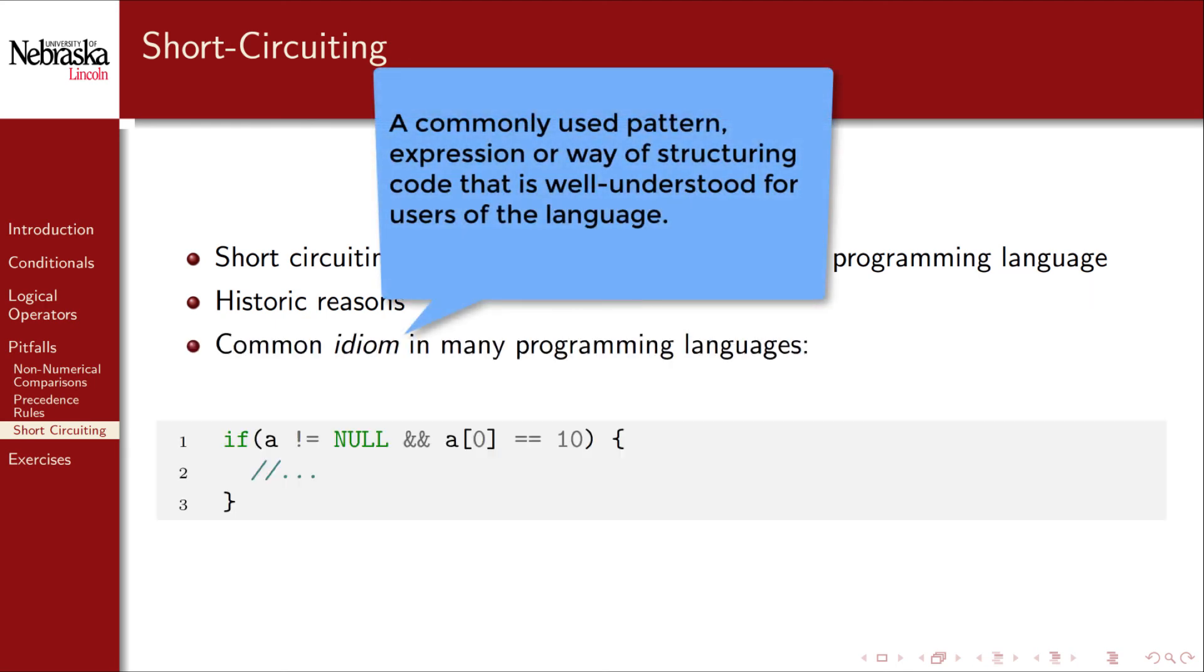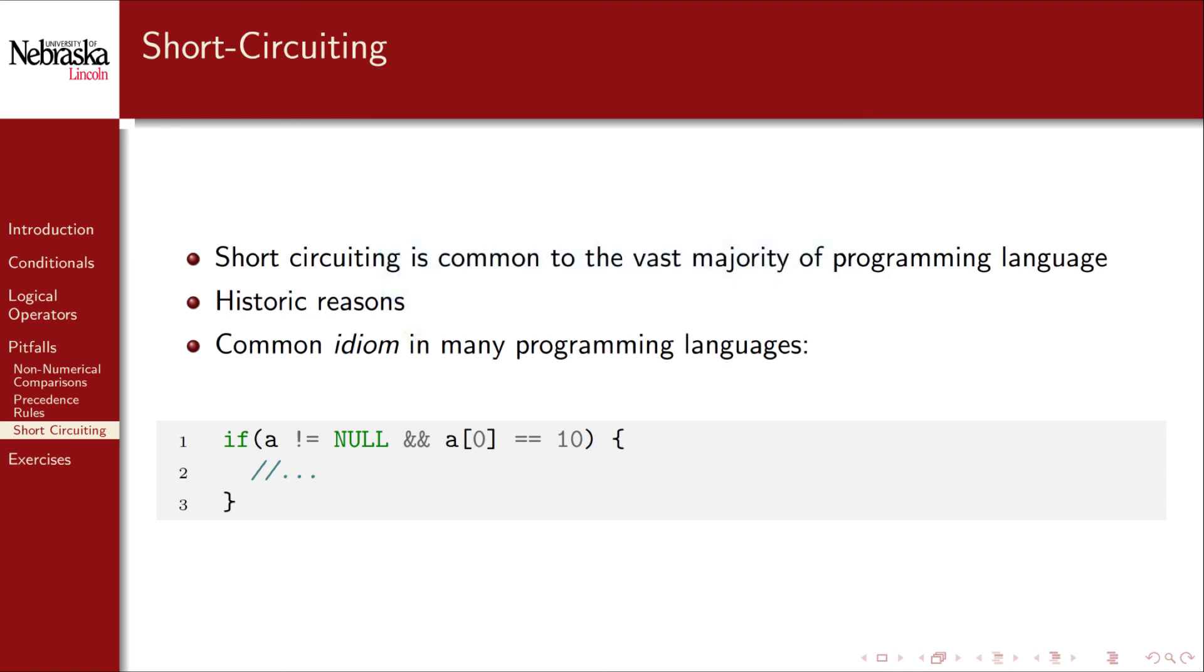In fact there are a lot of common idioms that rely on short-circuiting in code. Performing a null pointer check before examining a value is common. If A is null then the second potentially dangerous operation is not evaluated. We'll revisit this issue later on when we get to pointers.